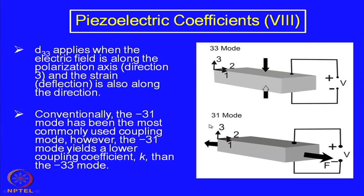This becomes the 3-1 mode, or 1-3 depending on which parameter we are measuring — whether applying a mechanical stress and measuring voltage, or the reverse. If it is 3-1 mode, we are applying the voltage in the 3 direction and measuring stress in the 1 direction. If it is 1-3, we are applying stress along direction 1 and measuring voltage in direction 3. There are many different combinations possible, and accordingly we have different coefficients with different subscripts.